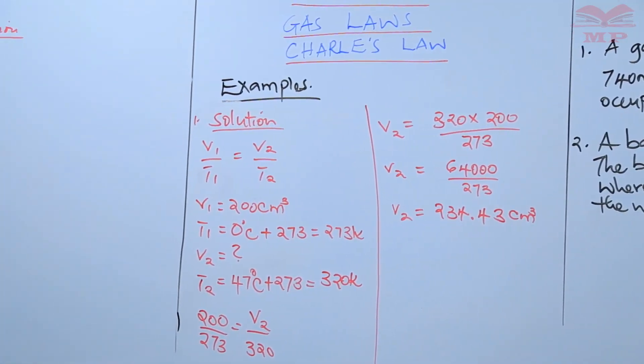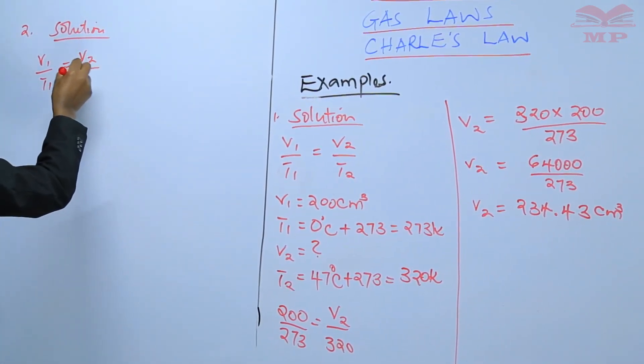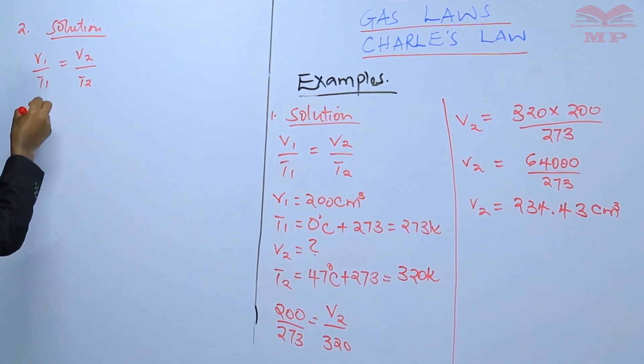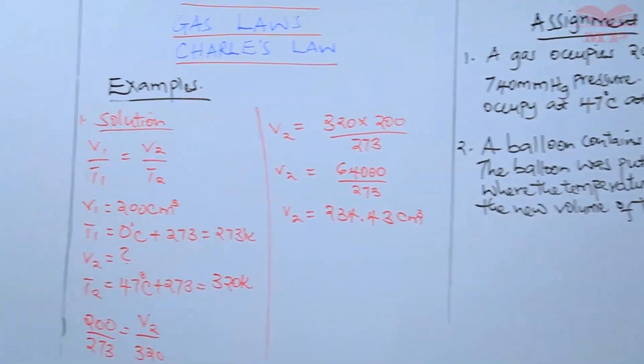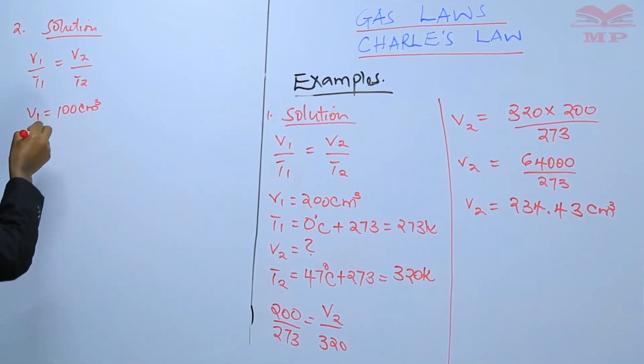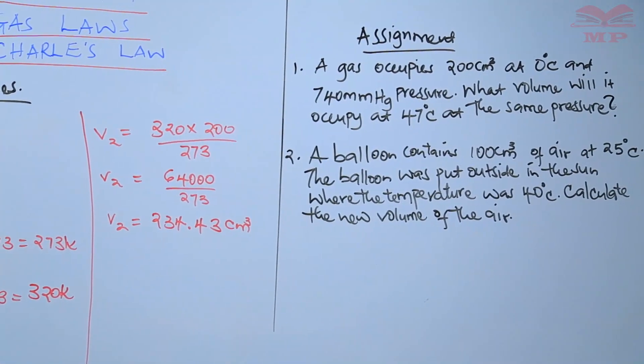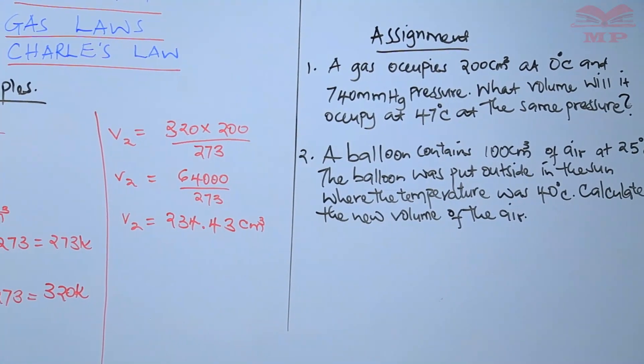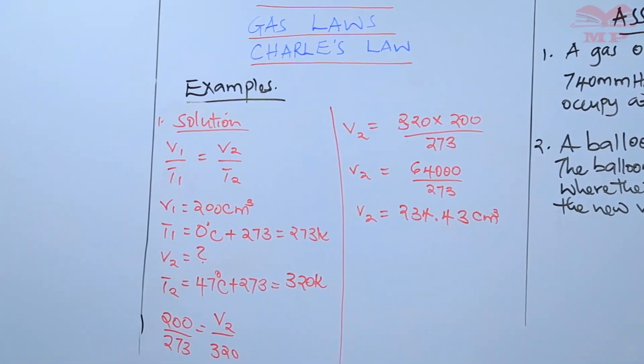Solution to that, the formula again, remember, it's V1 divided by T1 equals to V2 divided by T2. From the question, now you can be able to isolate V1, T1, V2, T2. Therefore, from the question, V1 is 100 centimeters cubed. T1 is 25 degrees Celsius. V2, we don't have V2 and that is what we are looking for. Then T2 is 40 degrees Celsius.